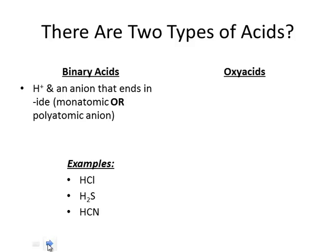Some examples of binary acids: we have HCl, H2S, and HCN. We'll look at why those formulas are the way they are and how we name those in a little bit.